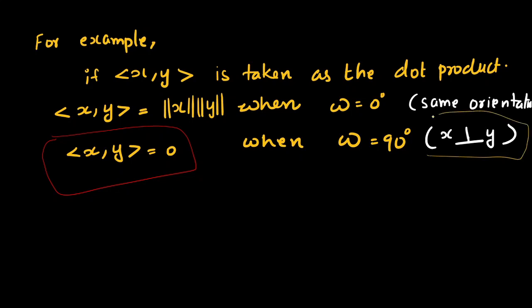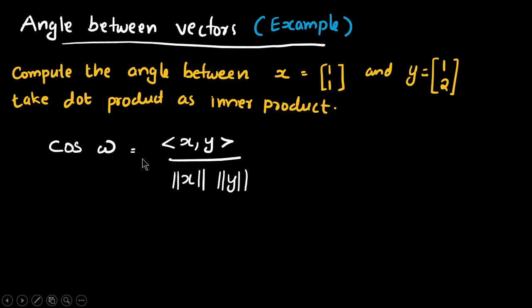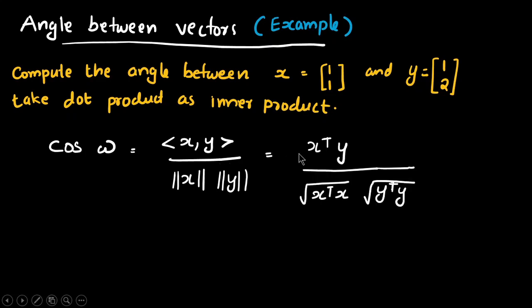x and y are orthogonal. Now for the angle between vectors, let's compute the angle between x = [1, 1] and y = [1, 2], using the dot product as the inner product. Cosine omega equals the inner product of x and y divided by the norm of x times the norm of y. The dot product is x transpose times y, and the norms are computed as the square root of x transpose x and the square root of y transpose y.